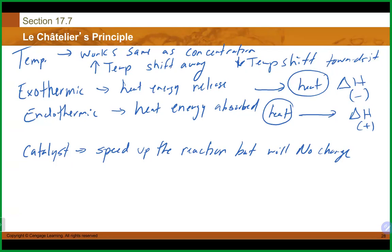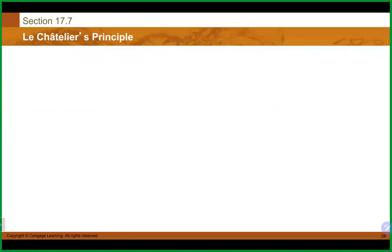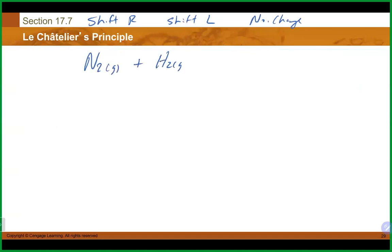Adding a catalyst speeds up the reaction but causes no change in equilibrium position — you just get there quicker. Adding a noble gas also causes no change because it is chemically inert.